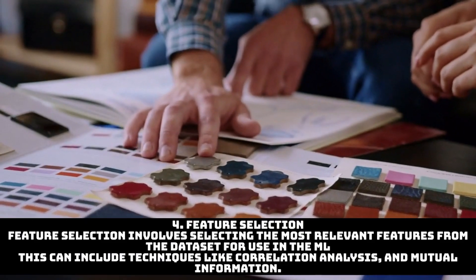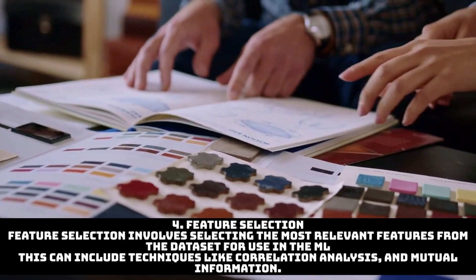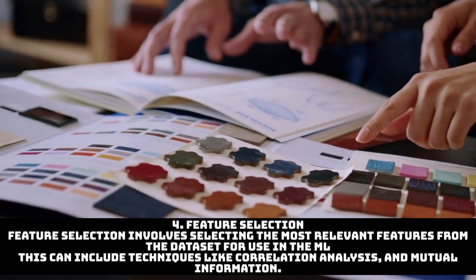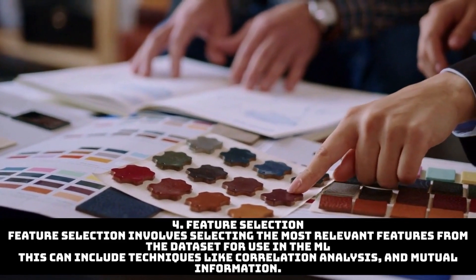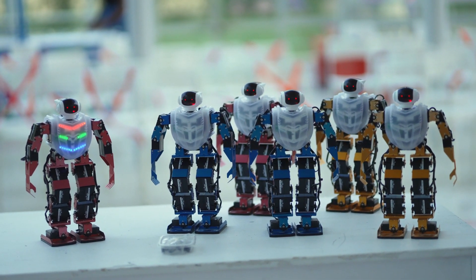The fourth one is feature selection. Feature selection involves selecting the most relevant features. Sometimes you may have huge data but all that data might be unnecessary, or all columns might not be required. Fetching only required data, fetching only required columns is really important.